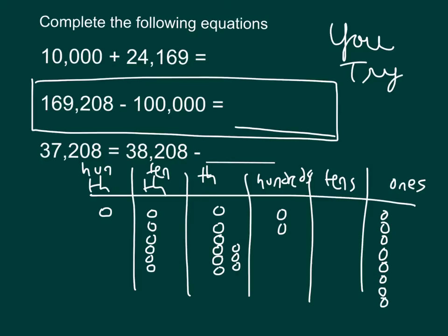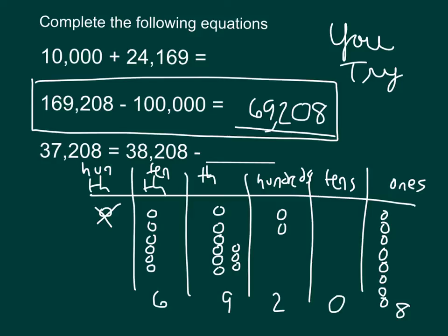It says to subtract 100,000, meaning it would be 100,000 less. There is 0 in the hundred thousands place, so I do not write a digit there because it's the largest unit in the number. I'm left with six ten thousands, nine thousands, two hundreds, zero tens, and eight ones — that number is 69,208. Let's read the number sentence: 169,208 minus 100,000 equals 69,208. That is 100,000 less than 169,208.